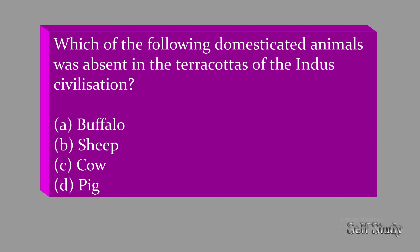Which of the following domesticated animals was absent in the terracottas of the Indus Valley Civilization? Terracottas are clay pots or toys. Options: buffalo, sheep, cow, people. The correct answer is C — cow. There is no evidence of cow anywhere in the Indus Valley Civilization.